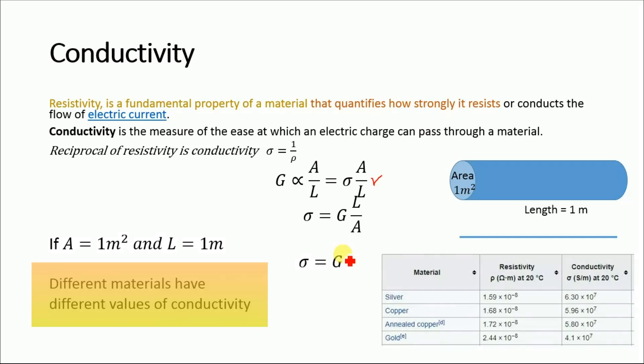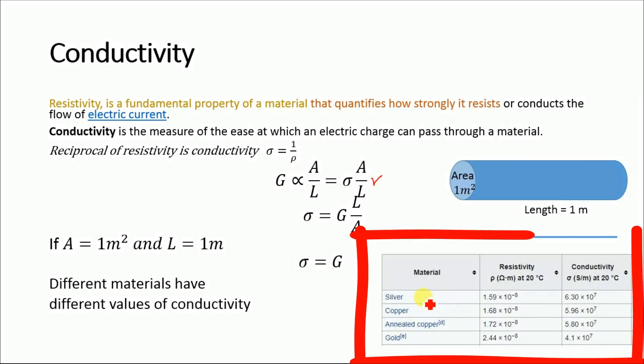Different materials have different values of conductivity. Here is a list showing the conductivity of silver, copper, annealed copper, and gold.